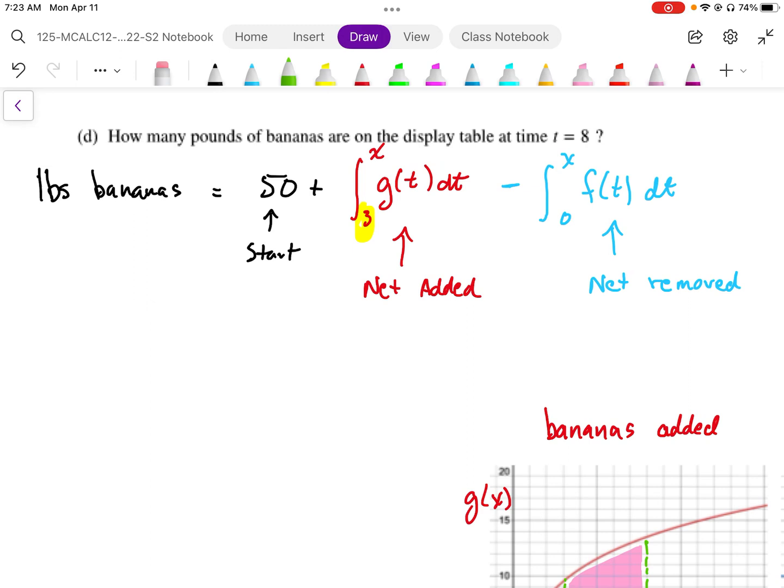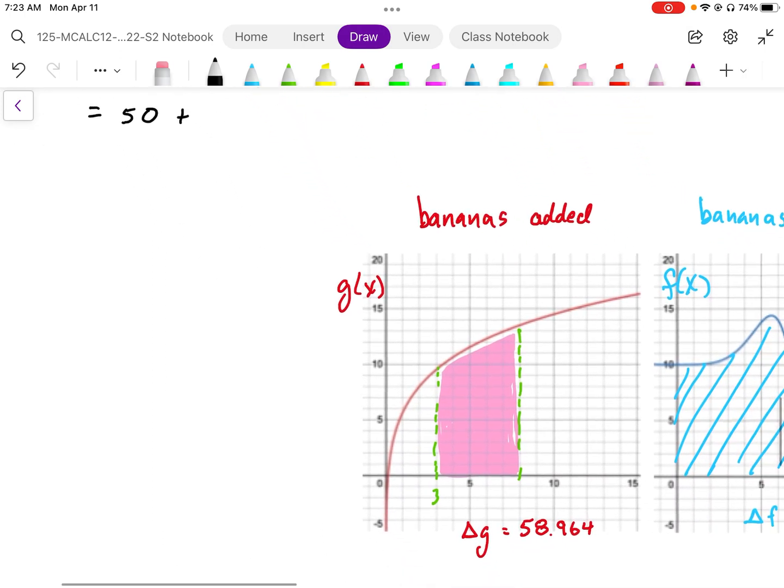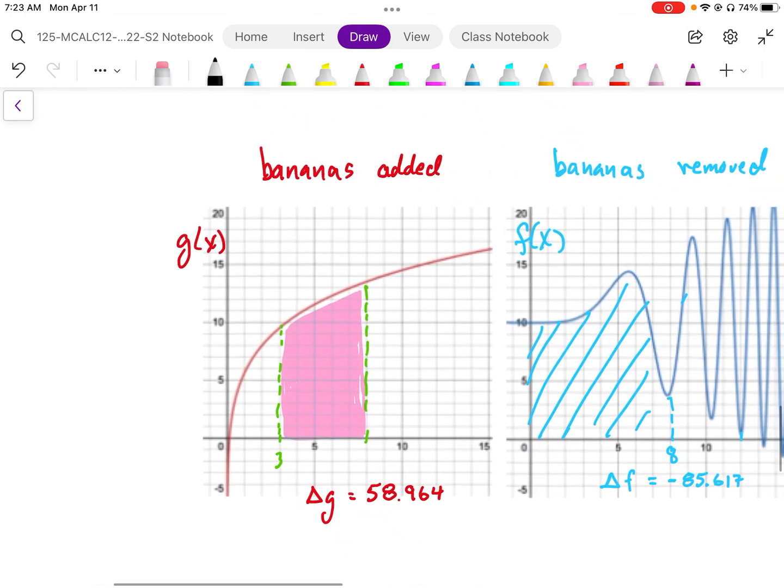So this is our calculation. We need to calculate the areas or the integrals. We start with 50, and we're going to add the bananas added based on g of x, from x equals 3 to x equals 8, to this point here.